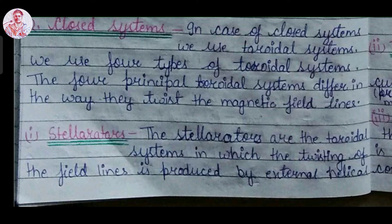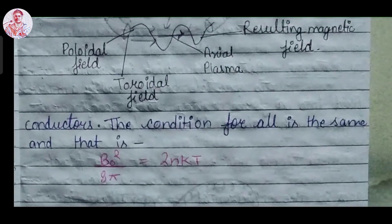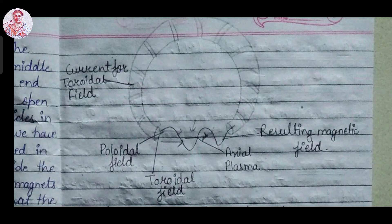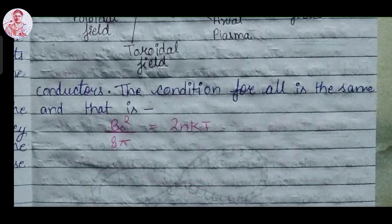First are Stellarators. The Stellarators are the toroidal systems in which the twisting of field lines is produced by the external helical conductor. In the figure you can see, we have a toroidal system having high current. Due to this, the resultant magnetic field is produced at the axial position of plasma. And the condition for the plasma confinement which is equal to B squared over 8π equals 2NkT will remain the same.